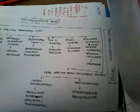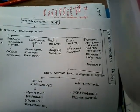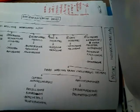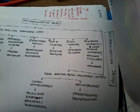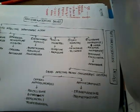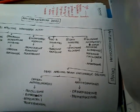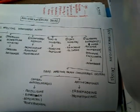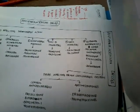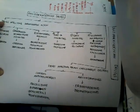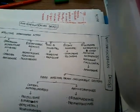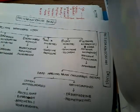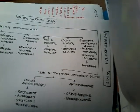The next group of drugs is MAO-B inhibitors: selegiline and rasagiline. These are monoamine oxidase B inhibitors. Normally, dopamine is degraded by the monoamine oxidase B enzyme. So these inhibitors will inhibit that enzyme, thus increasing dopamine activity.